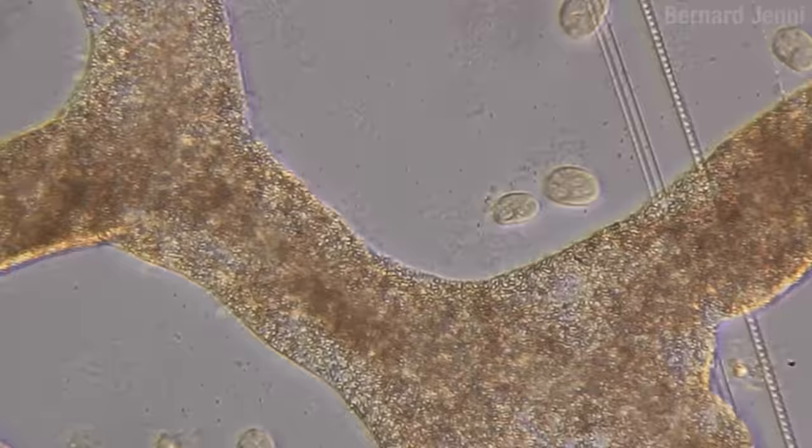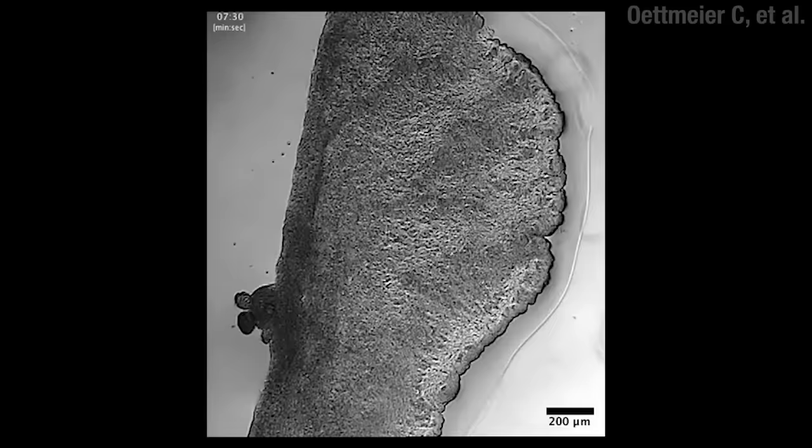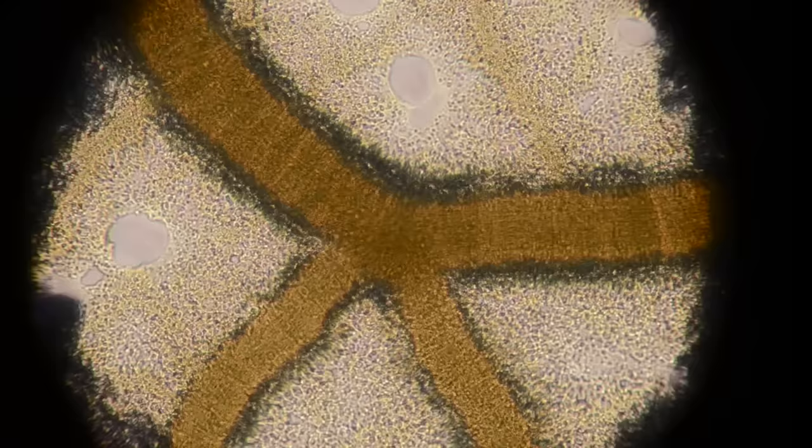All those nuclei start making these proteins that have the ability to link up. And when they do, they start forming these tubes. The proteins are the same ones we have in our muscles. And so the tubes can contract. And if one part contracts, then its neighbors do, too.